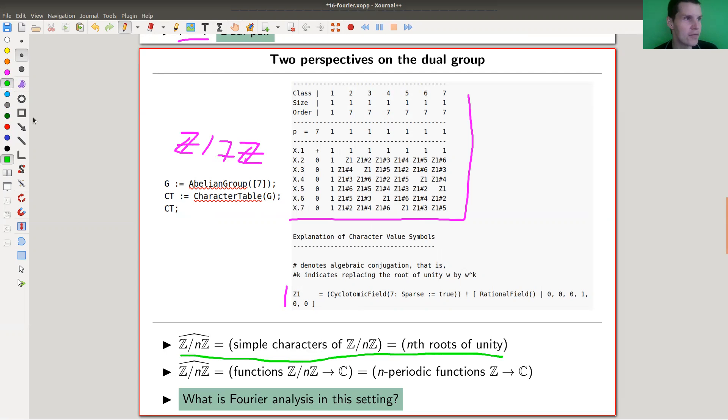But you can also think of the dual group - remember these were just functions from Z to the n to Z. And functions from Z to the n to Z is actually just n periodic functions from Z to Z, right.